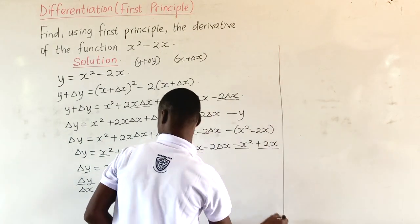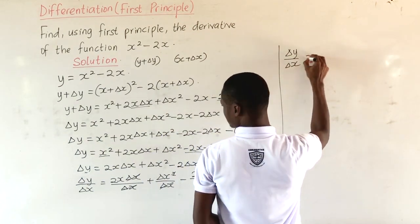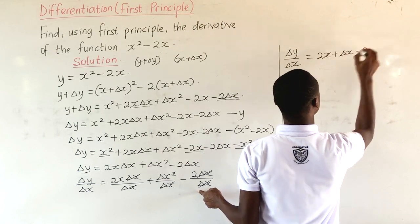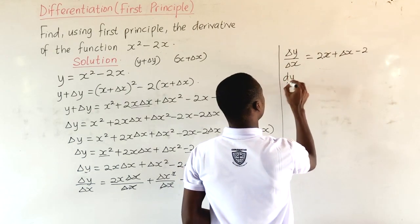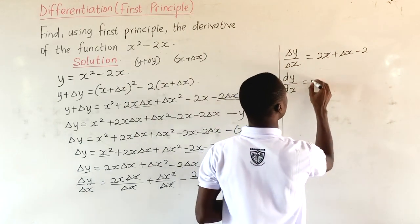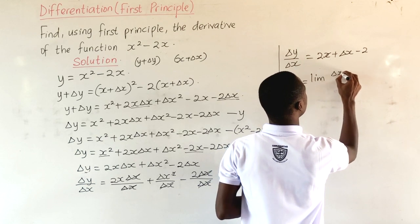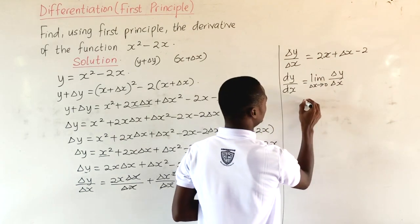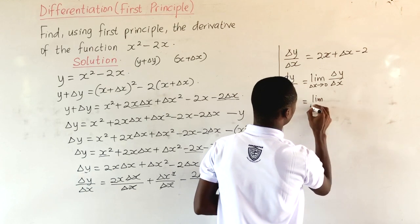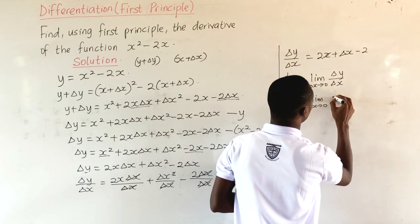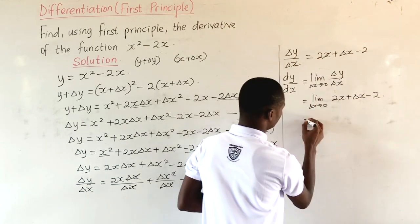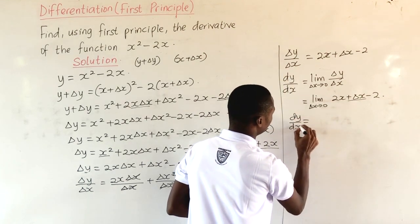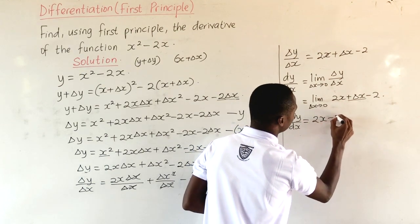Dividing through by delta x, we will be left with change in y over change in x equal to 2x plus delta x minus 2. Then, the derivative of the function y with respect to x is equal to the limit of change in y over change in x as delta x approaches 0. This gives us the limit as delta x approaches 0 of 2x plus delta x minus 2. As delta x approaches 0, that term becomes 0, and we have the derivative of y with respect to x equal to 2x minus 2.